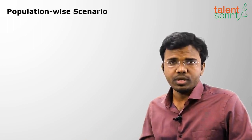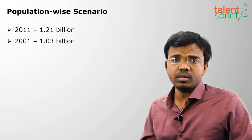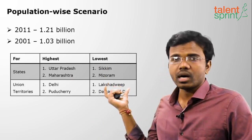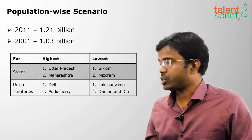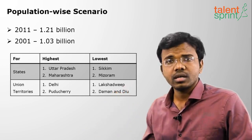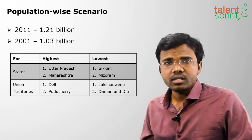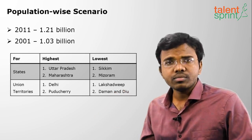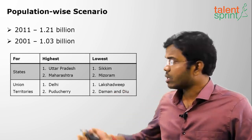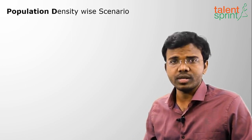In terms of population, India's population in 2011 is 1.21 billion and in 2001 it was 1.03 billion. Uttar Pradesh occupies the highest position in population, and Maharashtra is second highest. Among union territories, Delhi is first and Puducherry is second highest. For lowest population among states, Sikkim has the lowest and Mizoram is second lowest. Among UTs, Lakshadweep is lowest and Daman and Diu is second lowest.